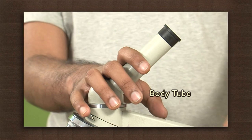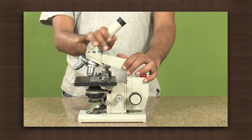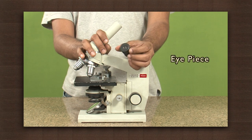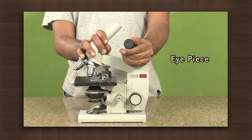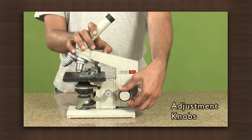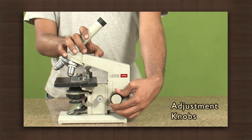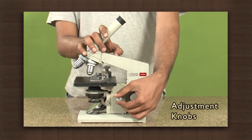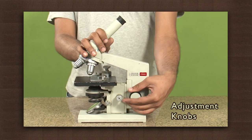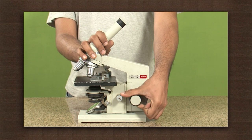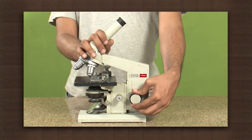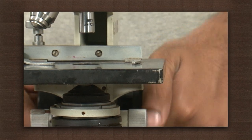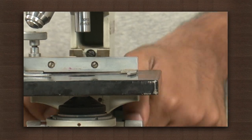The objective is followed by a body tube where a true image of the specimen is formed. The body tube ends with an eyepiece. On the arm of the microscope there are two knobs: a coarse adjustment knob and a fine adjustment knob, which are adjusted to bring the image into focus. The eyepiece typically magnifies the image formed by the objective up to ten times.